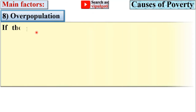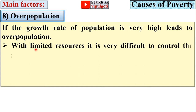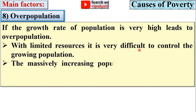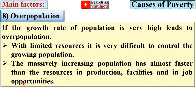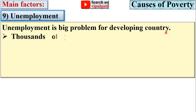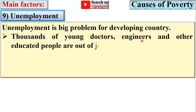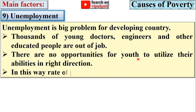Next, overpopulation. If the growth rate of population is very high, it leads to overpopulation. With limited resources, it is very difficult to control the growing population. The massively increasing population grows almost faster than resources in production, facilities, and job opportunities. Next, unemployment. Unemployment is a big problem for developing countries. Thousands of young doctors, engineers, and other educated people are out of jobs, with no opportunities for youth to utilize their abilities, and thus the rate of poverty increases.